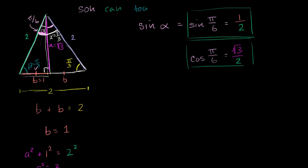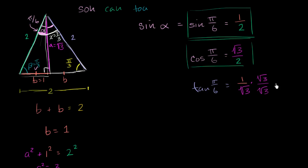Finally, the tangent of pi over six: we can use opposite over adjacent, or sine over cosine. The opposite side is one and the adjacent is square root of three, giving one over square root of three. Rationalizing by multiplying by square root of three over square root of three, we get square root of three over three. And we've figured out all the missing information about this triangle.